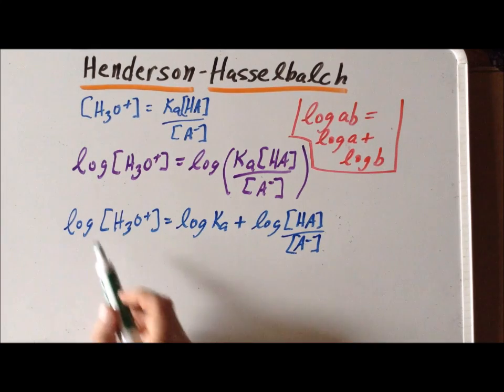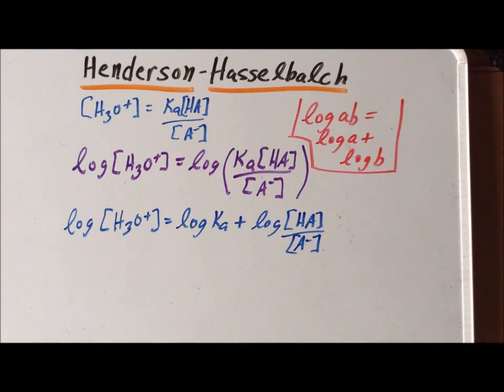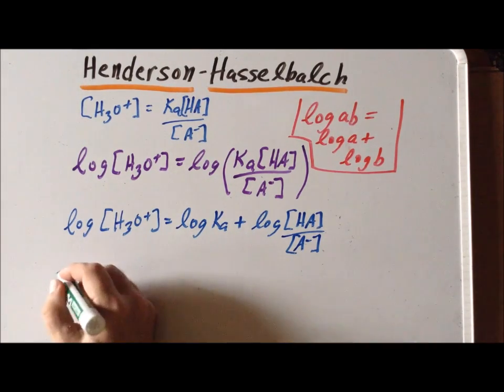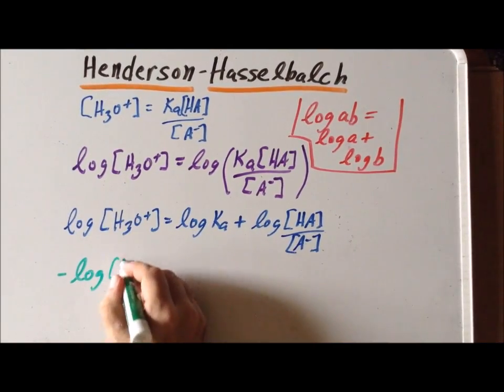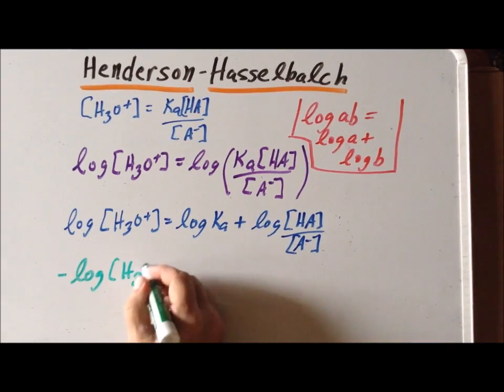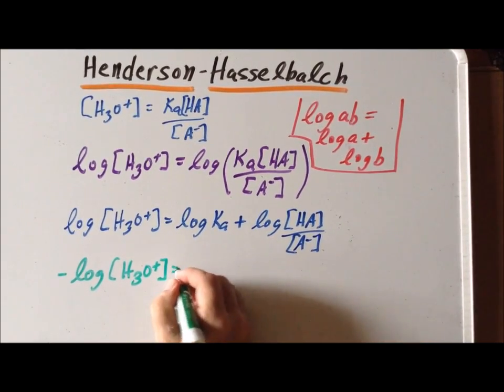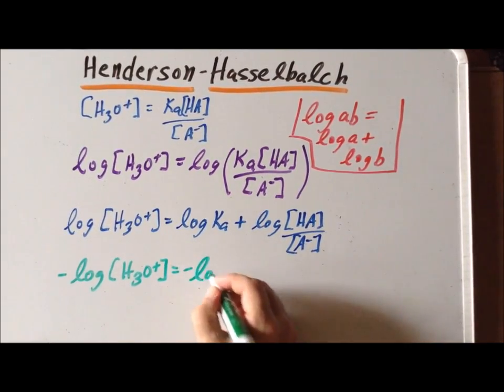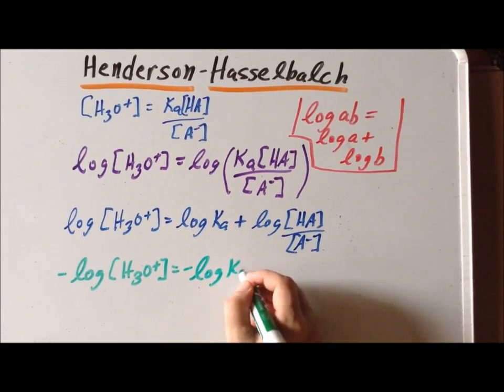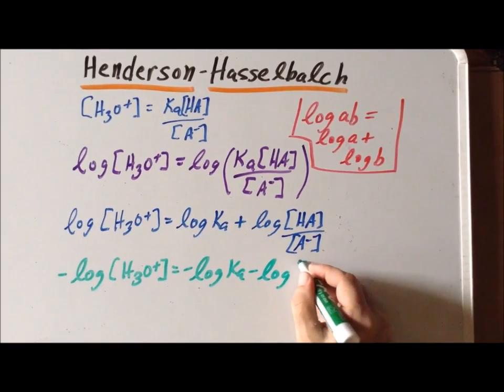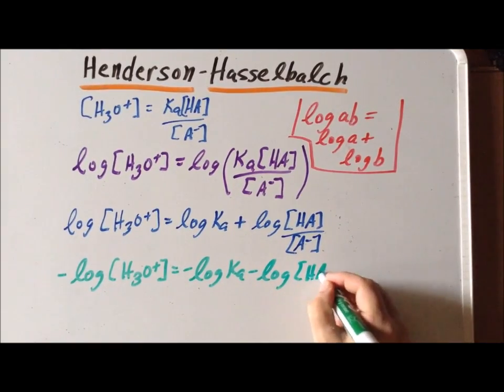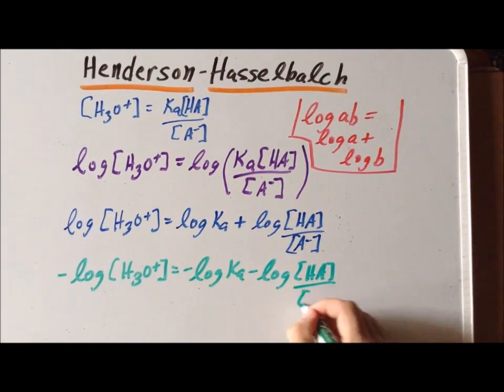And that gives us the negative log of H3O plus is equal to the negative log of Ka minus the log of HA divided by A minus.